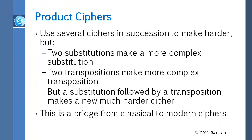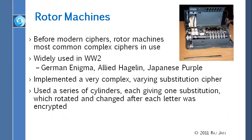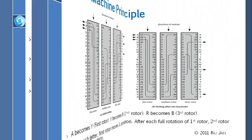You could combine substitution and transposition — that is the product cipher. You could combine two substitutions to make a more complex substitution, or two transpositions for a more complex transposition, or substitution followed by transposition to make a much harder cipher. This is what is done today in DES and AES. One of the original machines that did this combination was the rotor machine used in World War II, which had many rotors — one, two, three, four, five, six — performing transposition and substitution.